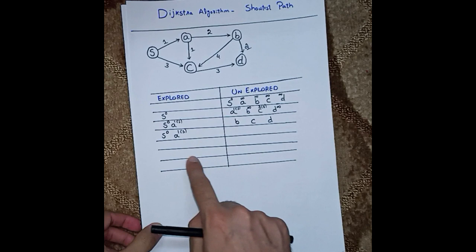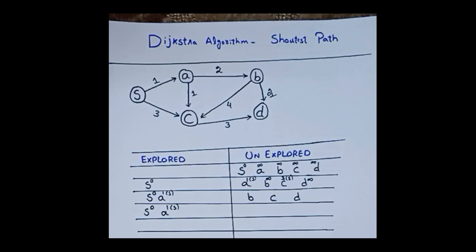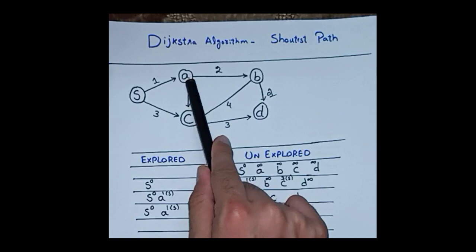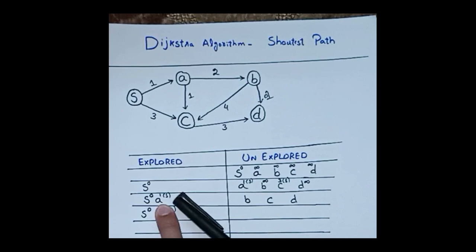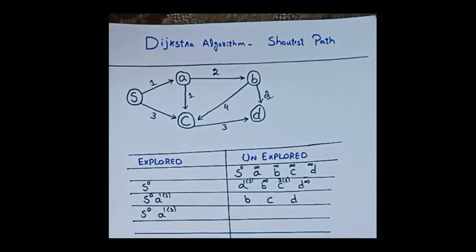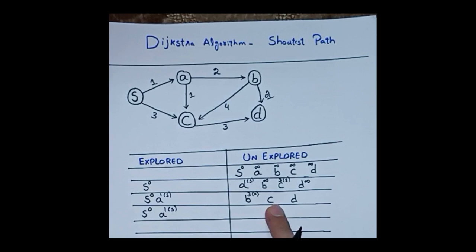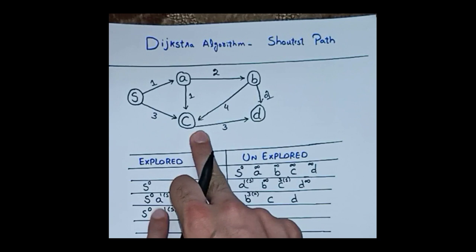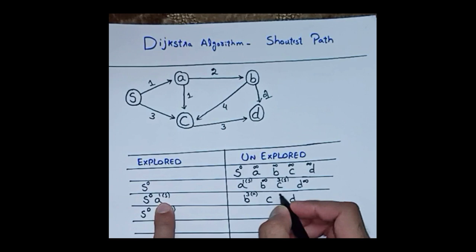Now I am standing at A. Is there a direct edge from A to B? Yes. A's minimum distance is 1 and the edge A to B is 2, so the overall distance to B is 1 plus 2 equals 3. I write 3 at the top of B and its parent is A. Is there a direct edge from A to C? Yes, distance 1. So 1 plus 1 equals 2. I write 2 at the top of C and its parent is A.